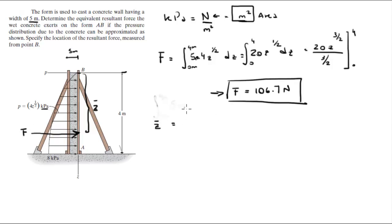Now c bar is given by the integral of c times 5, remember, times the function which is 4 c to the 1 half dc